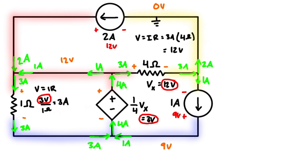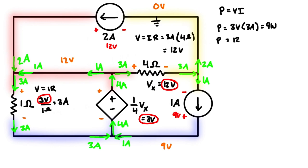Now let's calculate power dissipation in the resistors using P = VI. For the one-ohm resistor: P = 3V × 3A = 9 watts. For the four-ohm resistor: P = 12V × 3A = 36 watts. Summing these gives a total power dissipation of 45 watts.